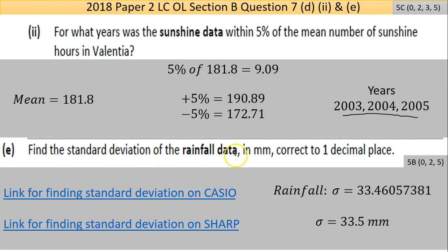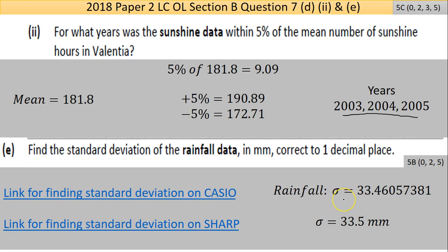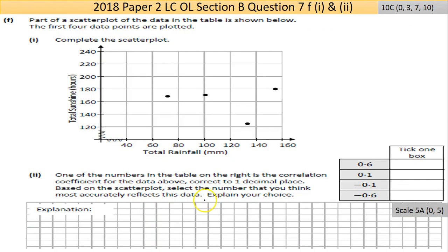Part E: find the standard deviation of the rainfall data in millimeters, correct to one decimal place. There's a link to a YouTube video on how to find standard deviation using the Casio and Sharp calculators. You can't calculate this by hand in the time given, so you need to use your calculator. The answer comes out as 33.46..., and rounding to one decimal place gives 33.5 millimeters.